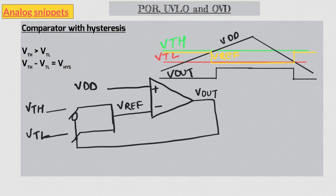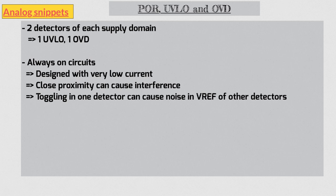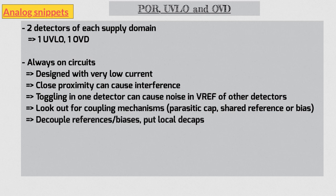Going by our example, we need four such detectors in our design: two for analog and two for digital supply, one for UVLO and one for OVD. These are generally always-on circuits, so designed with very low currents. Most of the time these circuits are also placed very close to each other, and as a result there can be interference. The most common situation is that toggling in one detector causes noise in the reference voltages of other detectors. Make sure you account for all the coupling mechanisms, and if necessary introduce some measures of decoupling. It is always good idea to have a bypass mechanism in case something goes wrong.